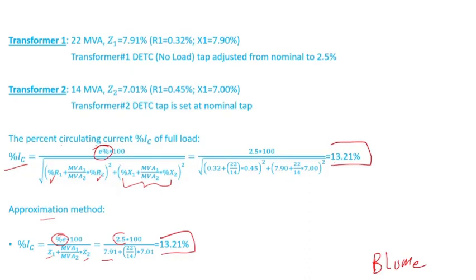As stated in part 4, circulating current could cause overheating, so it's important to make sure that you're not going to cause overheating, you're not going to overload one of the transformers above its rating.